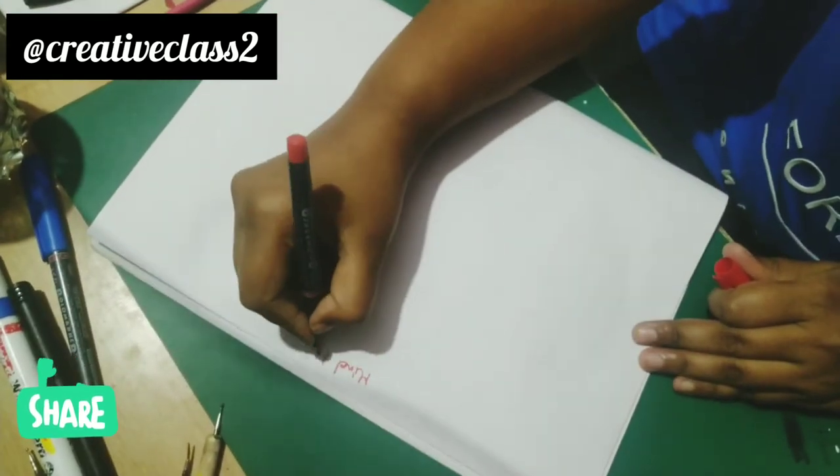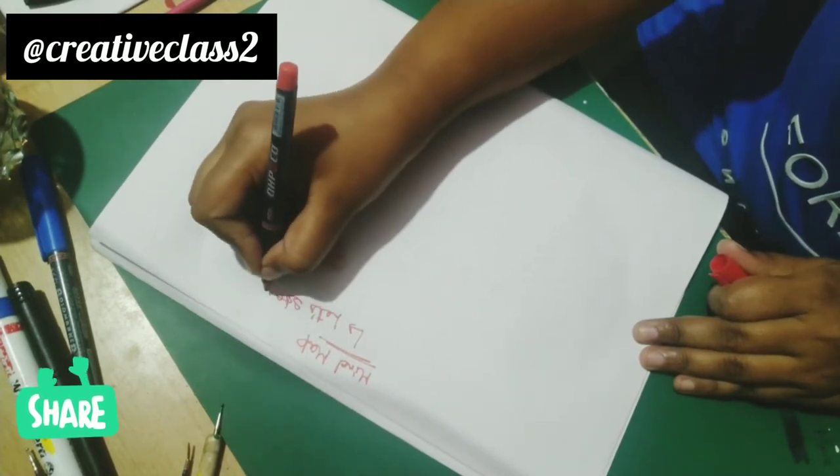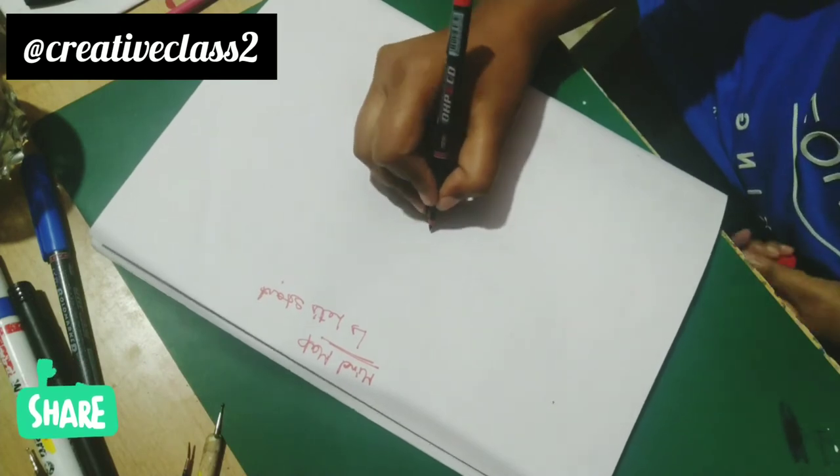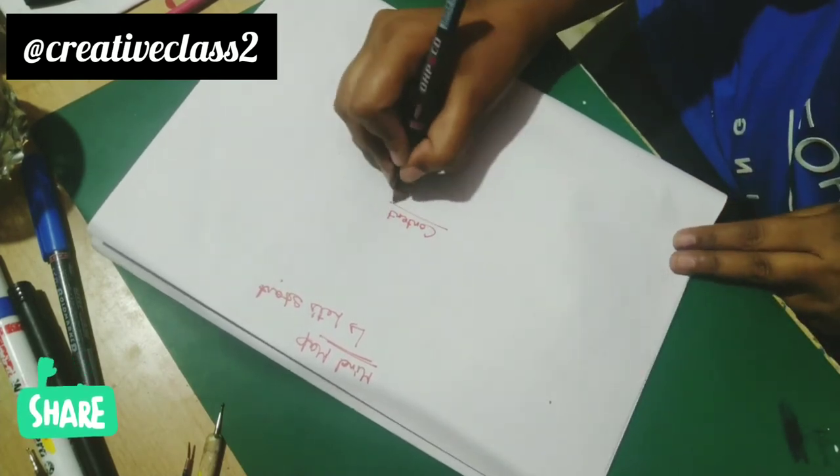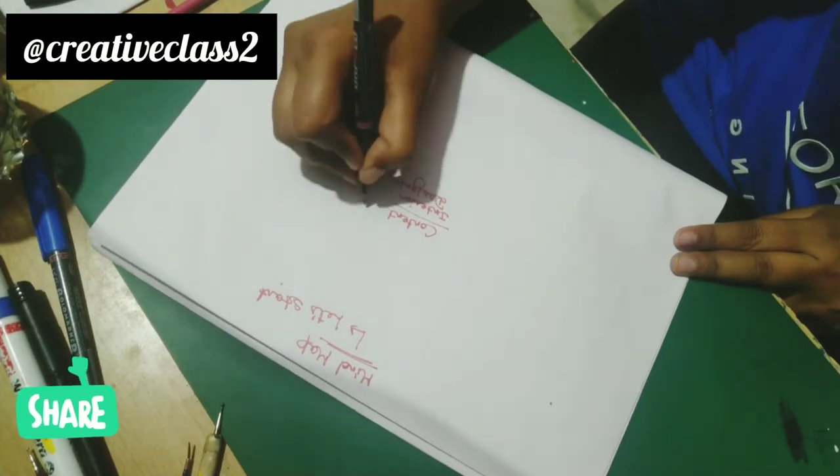I have to plan content for my YouTube channel related to interior design. So I will be doing mind mapping for that. First, I will write this in the center of the paper: content in bracket interior design. Now I have to make main branches for this.